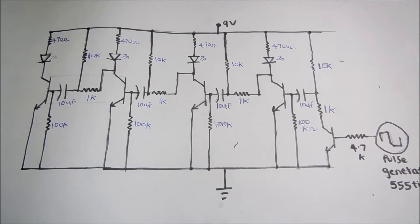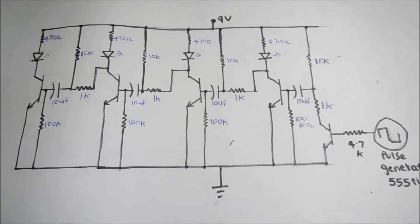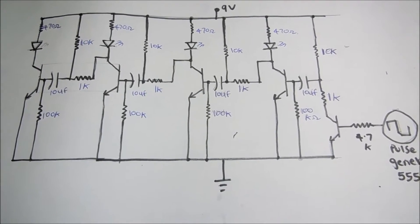This is the circuit diagram of a running LED with fading transition. Before you understand this circuit, I recommend you watch my earlier videos on edge detectors.